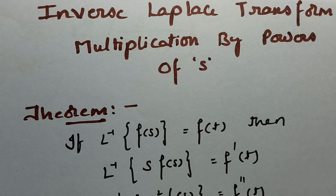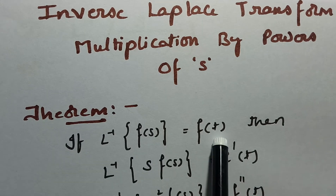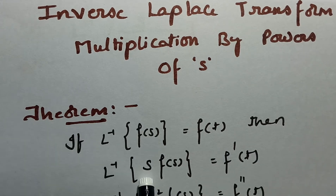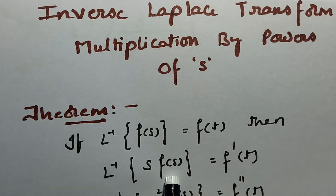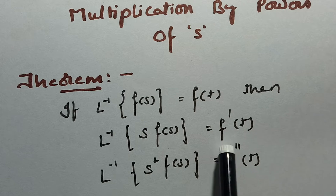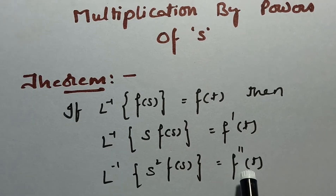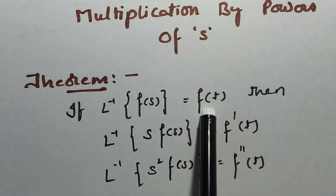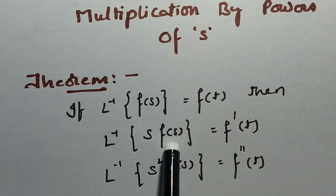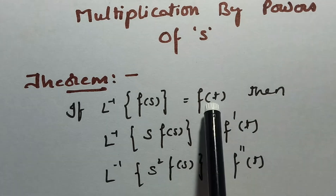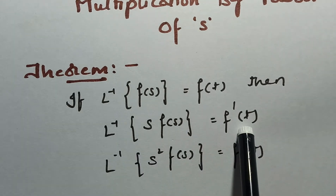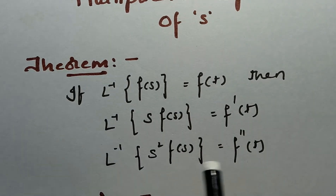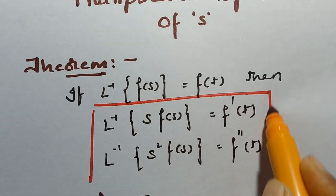See the theorem here related to the multiplication. It is the theorem of multiplication of inverse Laplace transform: if the inverse Laplace transform of F(s) is f(t), then the inverse Laplace transform of s multiplied with F(s) — we have to derive for one time. So if s is multiplied for two times, we have to make a double derivative of f(t). If one s is there, we make one derivative; if two s's are there, we make a double derivative of f(t).